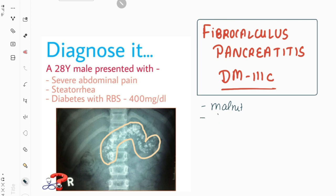Next is cyanide toxicity, which is basically due to excess intake of cassava fruit. We know this because the prevalence of this disease is higher in tropical countries where cassava intake is more. Next are genetic factors, which include SPINK1 gene mutation. Next is vitamin C and vitamin A deficiency, which leads to reduced antioxidant effect.